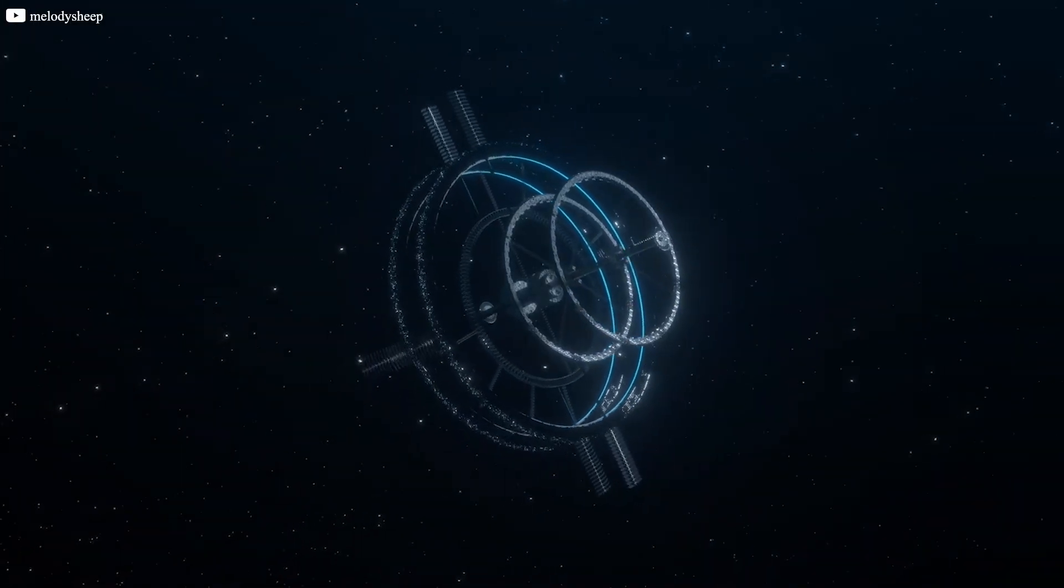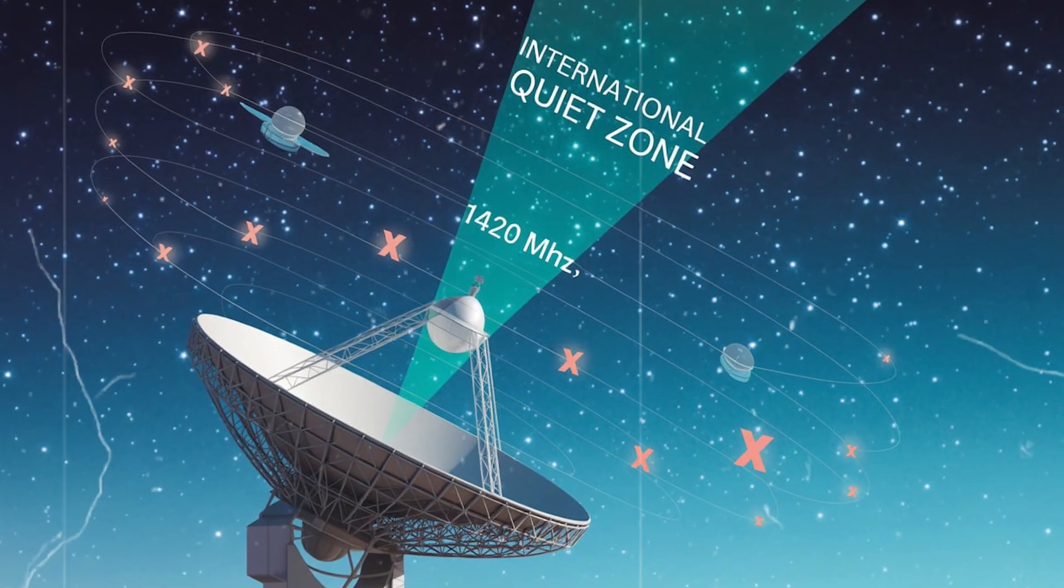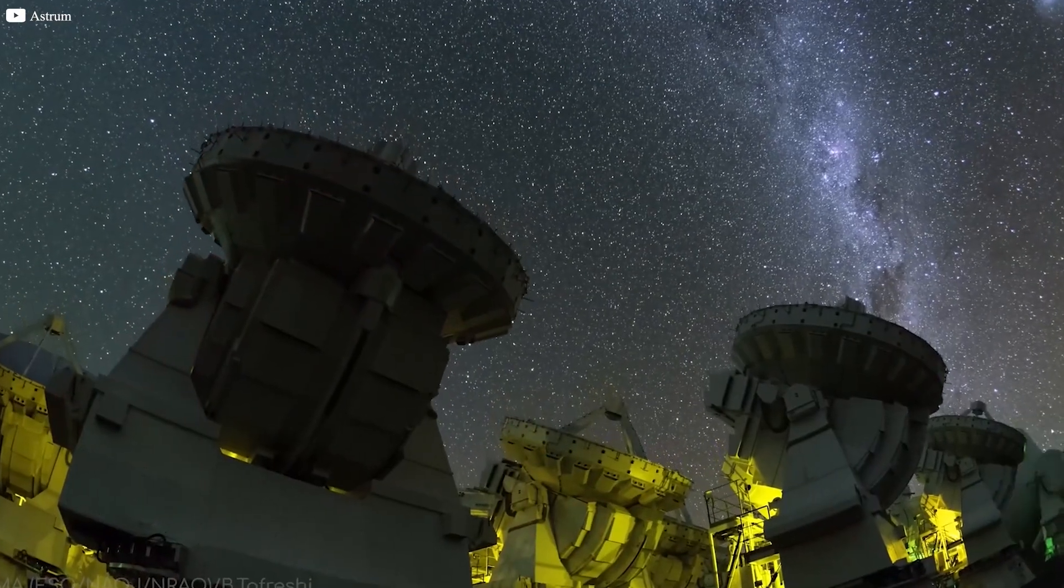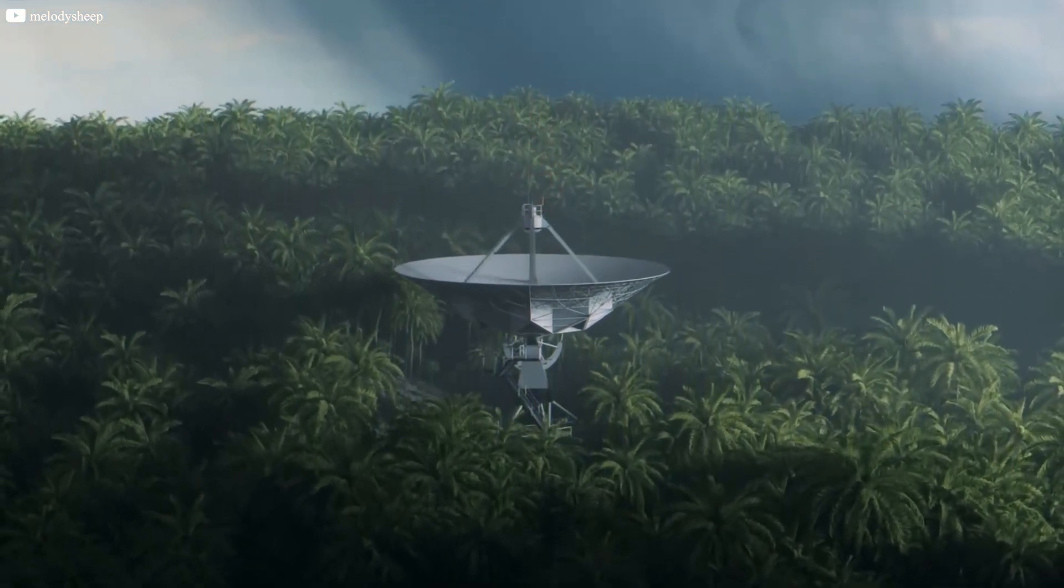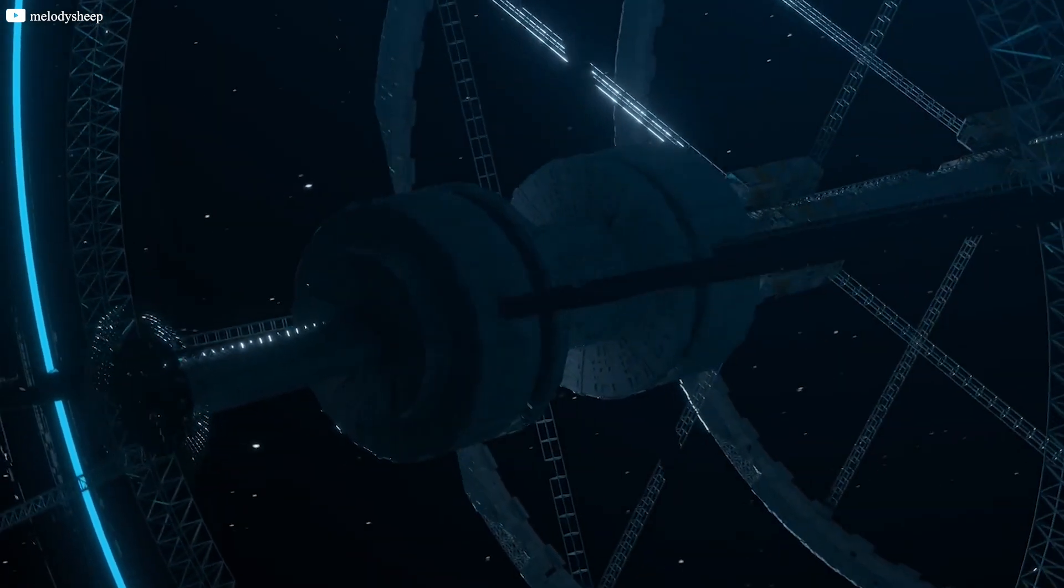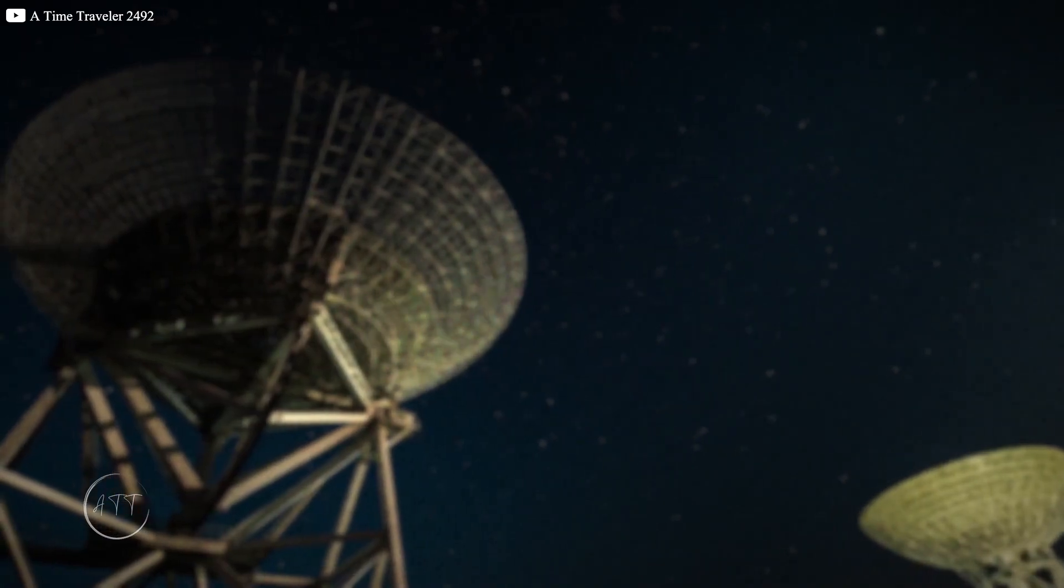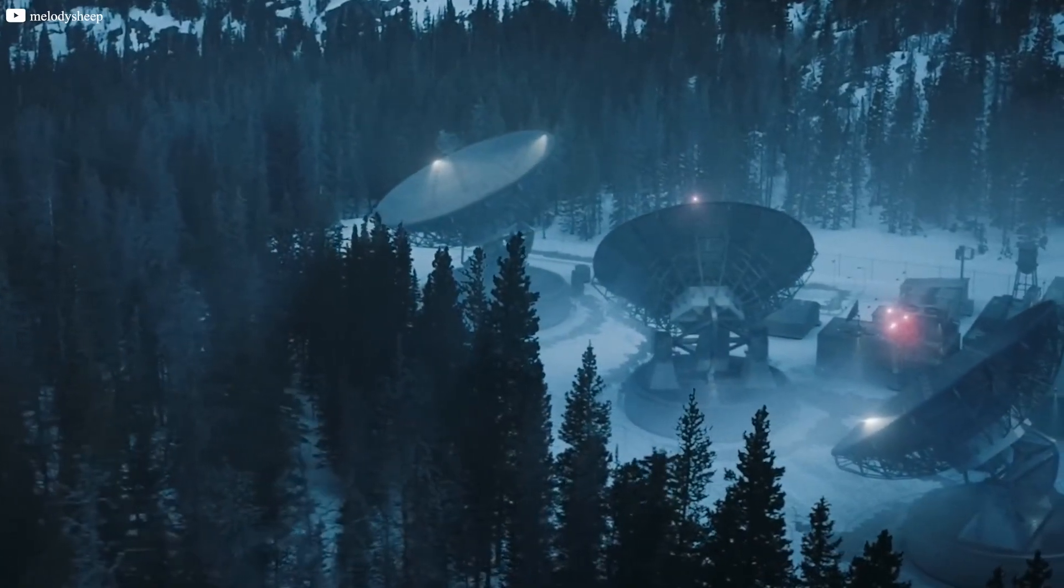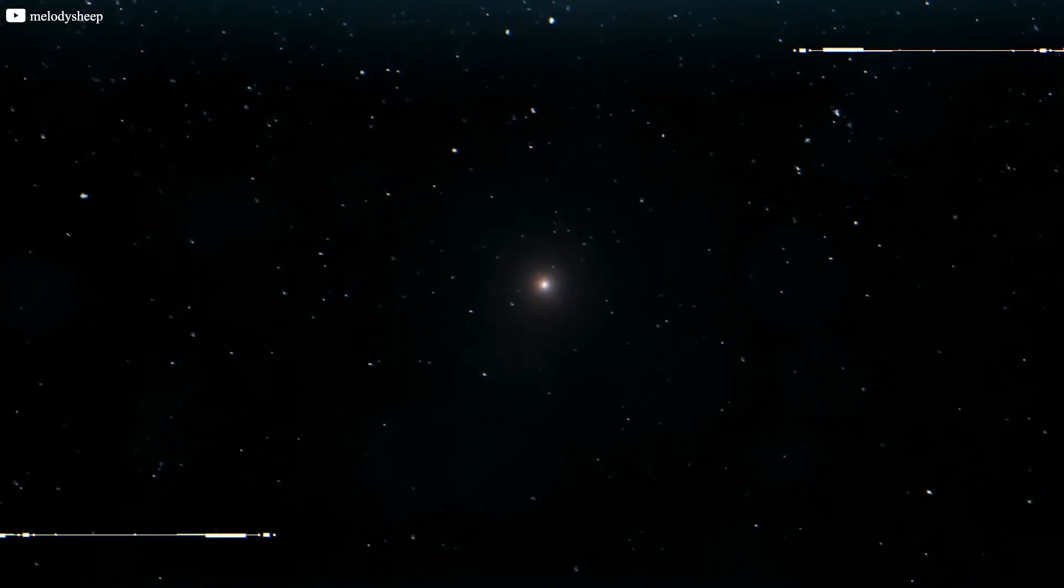However, there were several issues with this theory. First, the frequency of the wow signal, 1420 megahertz, was protected by international treaty as a quiet zone to avoid interference with radio astronomy. Military signals typically operate on different frequencies, so the chances of a military satellite transmitting on this protected band were slim. Furthermore, Big Ear's design was intended to filter out any local interference, including signals from satellites and planes. After thorough testing, researchers ruled out this possibility, leaving the signal's true origin still unknown.